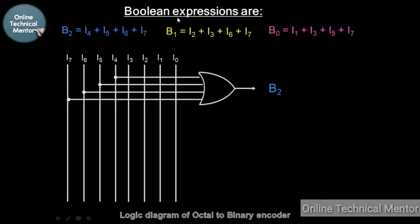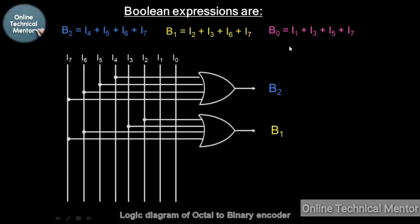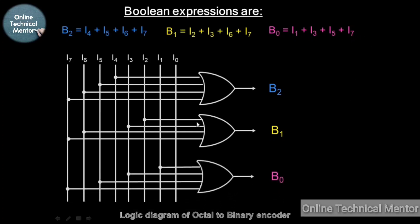For the next expression, B1, draw connections from I2, I3, I6, and I7 into an OR gate. And for B0, draw connections from all odd inputs — I1, I3, I5, and I7 — into an OR gate, and you will get B0. This is the complete logic diagram of the octal to binary encoder.